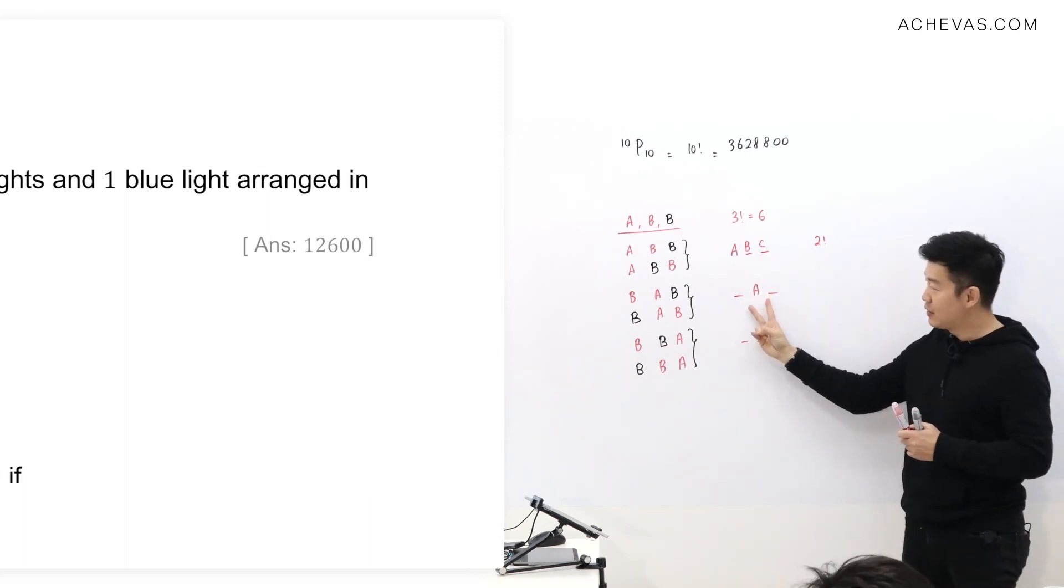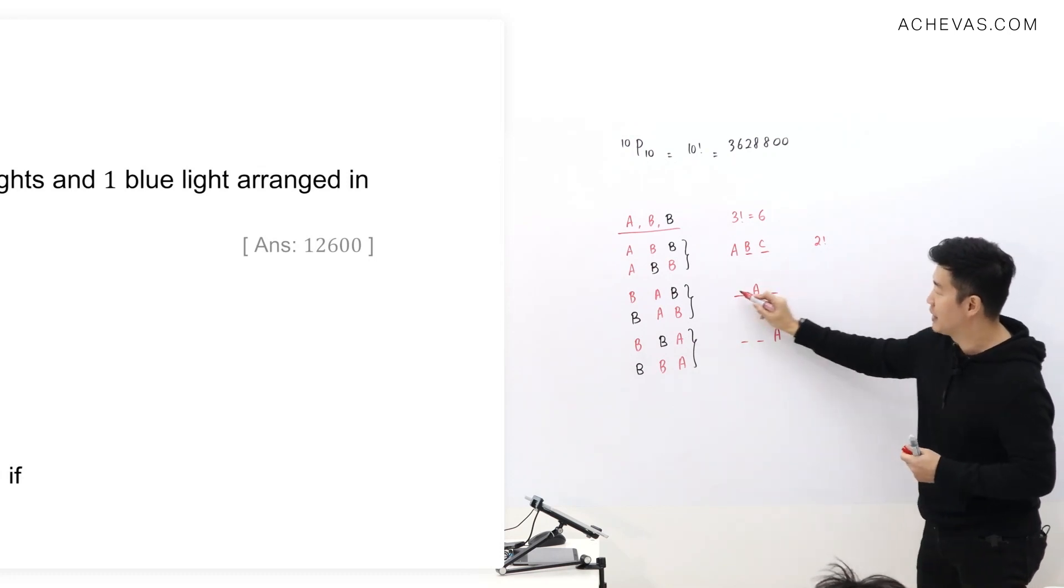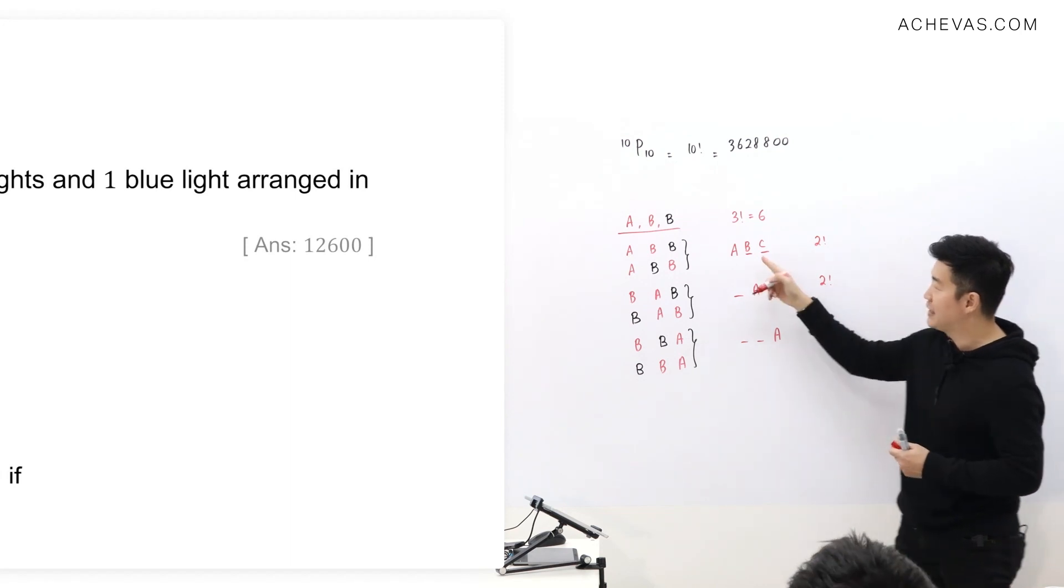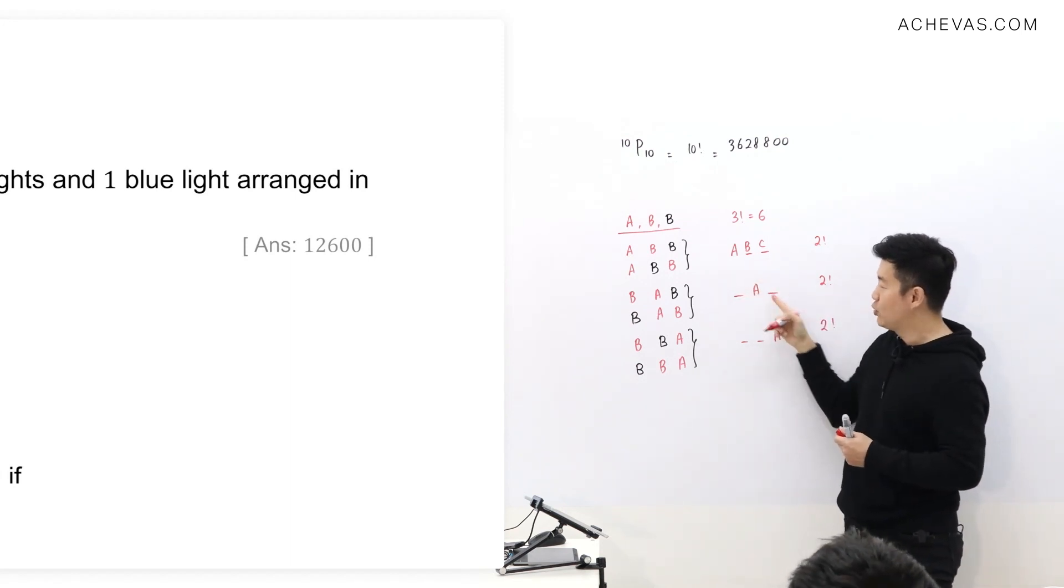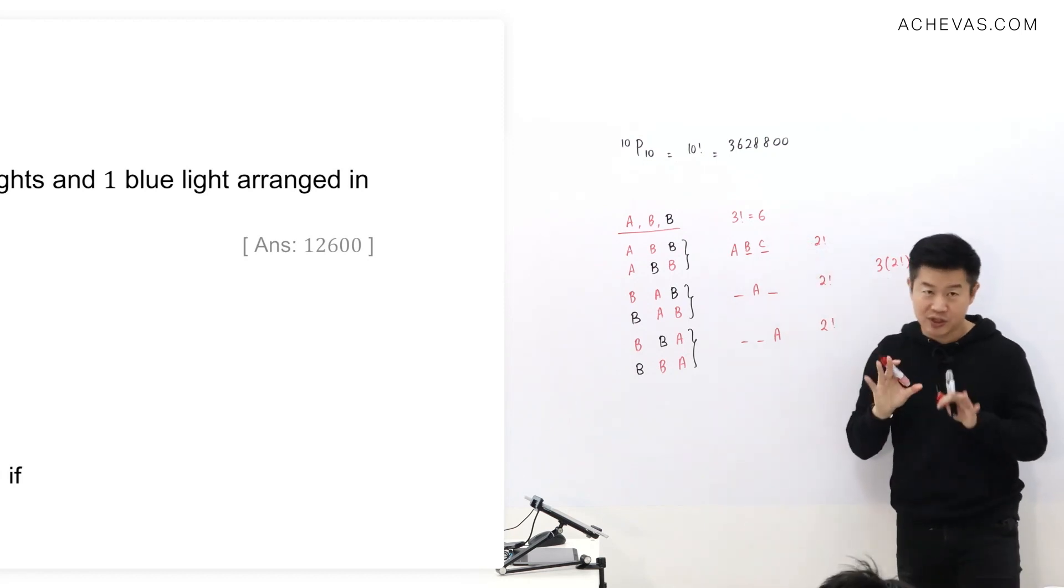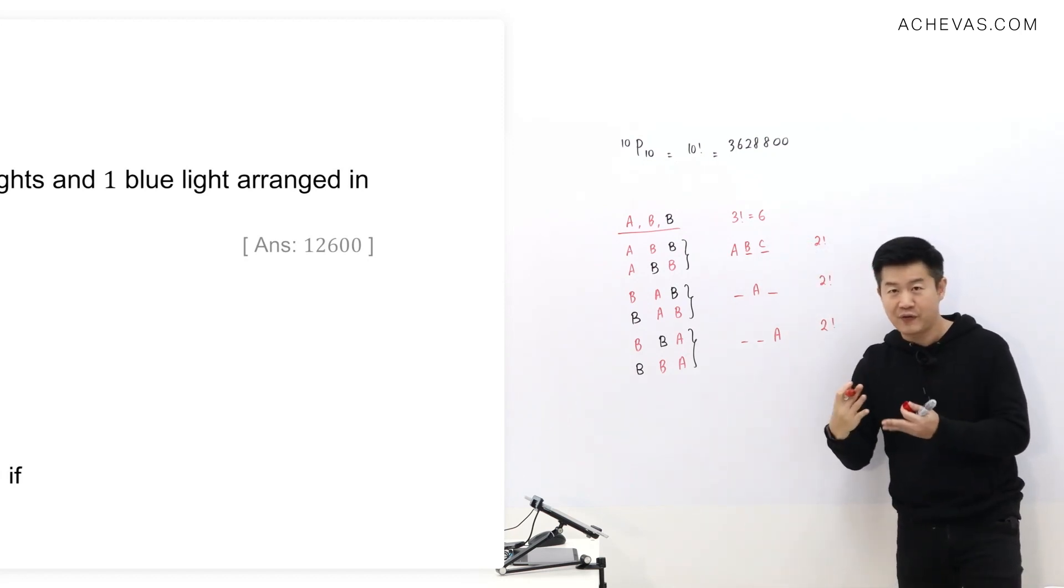If it is this scenario where A is fixed in the center, this scenario is going to be like B, C here, it's going to be another 2 factorial. If it is this scenario, it's going to be another 2 factorial, which means that if I were to allow B, C to go into these two spaces, I will have a total of 3 times 2 factorial, which is equal to 6, which is correct. I'm verifying this again.